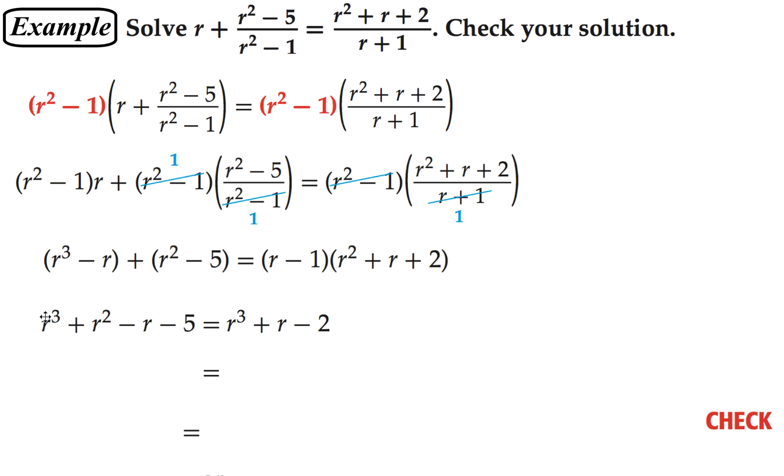And then subtracting r cubed from both sides, those will drop out. And moving all of our terms to the left, we get r squared minus 2r minus 3 is equal to 0.